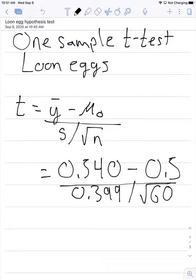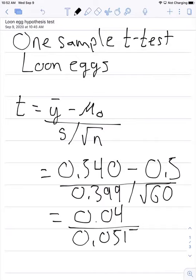When we do this, we'll get 0.04 in the numerator, and we'll get 0.0515 in the denominator.